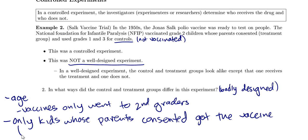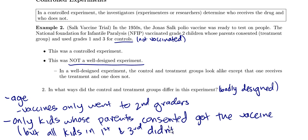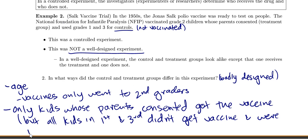Only kids whose parents consented got the vaccine, but all kids in first and third grade were included in the study regardless. So again, maybe the difference was based on what demographic the children were in.